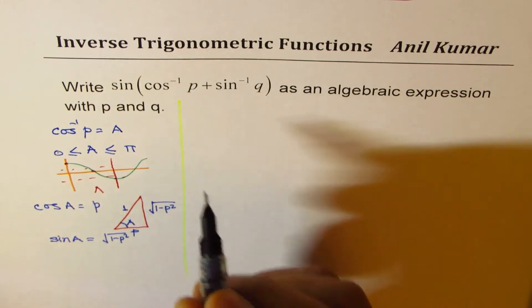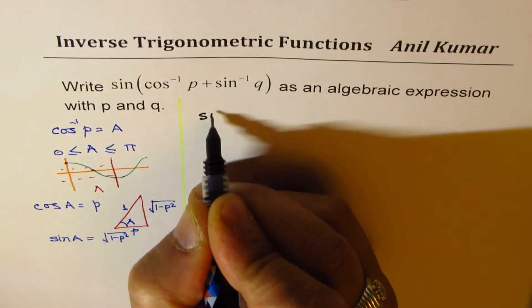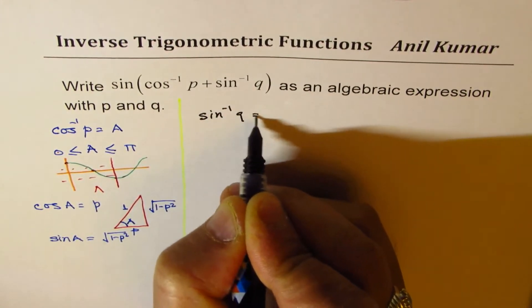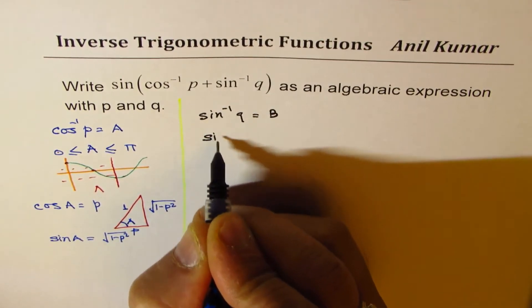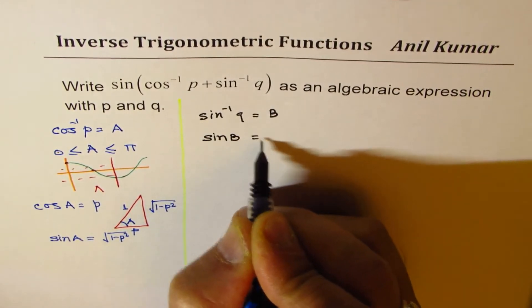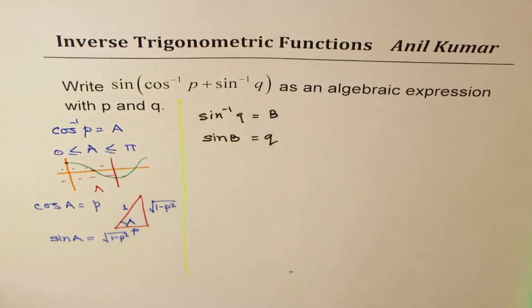Now let's work with sin⁻¹q. So let us say that sin⁻¹q is equal to B. In that case, sin B is equal to q.